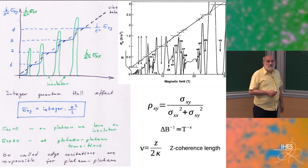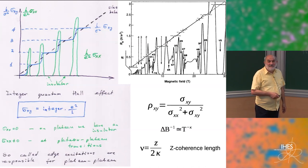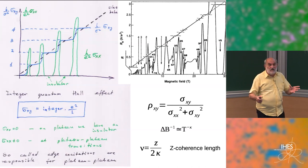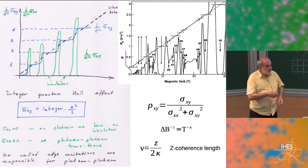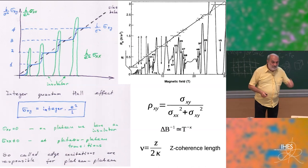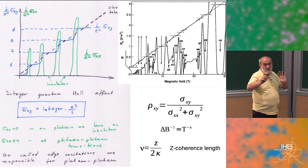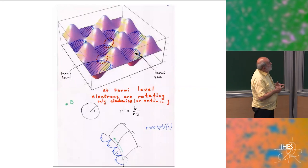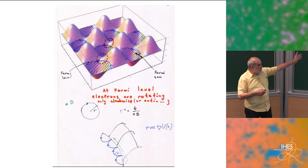The picture was described more or less by Chalker and Coddington. Physically: you have a potential landscape, free electrons filling it, forming puddles of Fermi regions like lakes. If you apply a magnetic field upward, electrons rotate with a radius inversely proportional to B and are all localized inside. Electrons in the bulk cannot conduct current; they are localized.